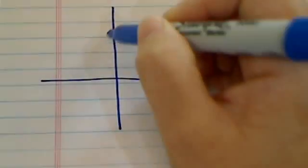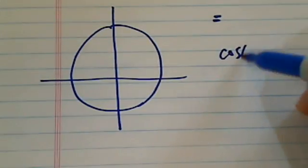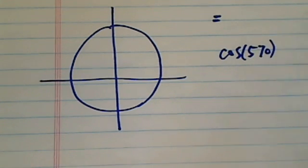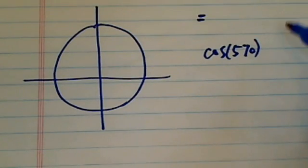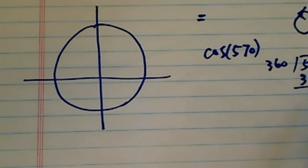Let's do one more example here. Draw a big circle. Now this time, we're looking for cosine of 570. 570 just means go around the circle once, you'll have 360. So 570 divided by 360, going around once, we have 210.